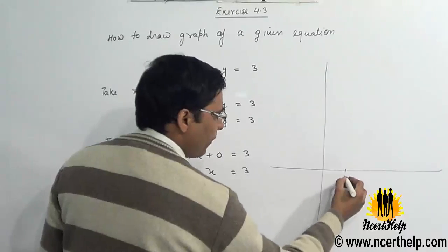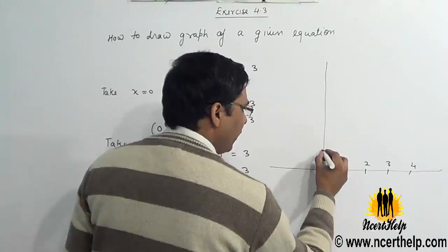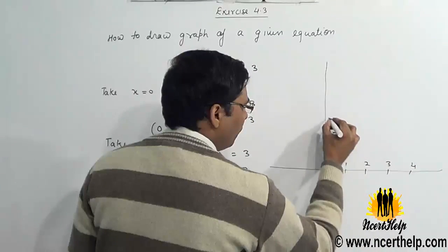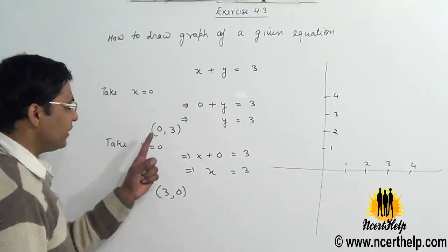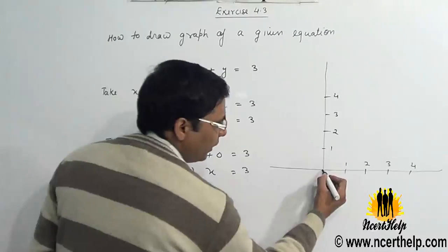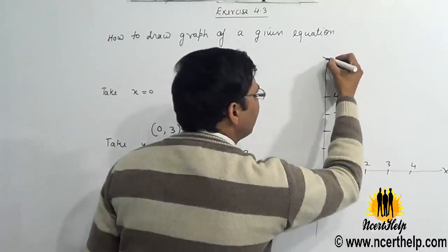Here will be 1, 2, 3, 4, and here will be 1, 2, 3, 4. First point is 0 comma 3, and this is origin (0,0). This is x-axis, this is y-axis.